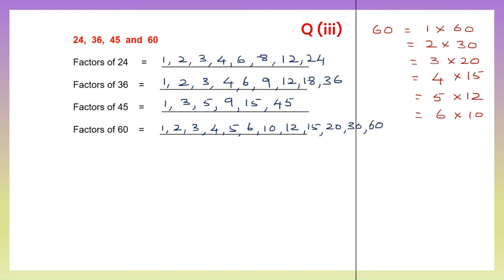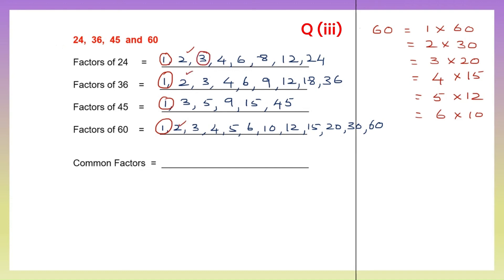Now we need to pick the common factors which will be common to all four numbers. 1 is common to all four. What about 2? 2 is there for three numbers but not for 45. Let's see 3 — 3 is common to all four. What about 4? No. 6? No. 8? No. 12? No. So the common factors are only 1 and 3. The bigger number is 3, so our HCF is 3.